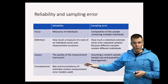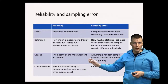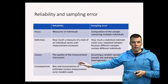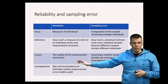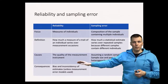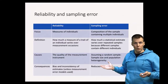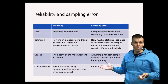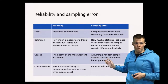The causes of reliability and sampling error are also different. Reliability is related to the quality of your measurement instrument — it is not related to sample size. Sampling error, on the other hand, is related to sample size and population heterogeneity, and only applies if you have a random sample.